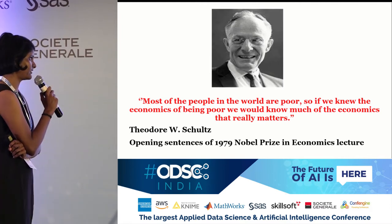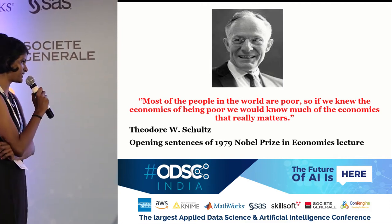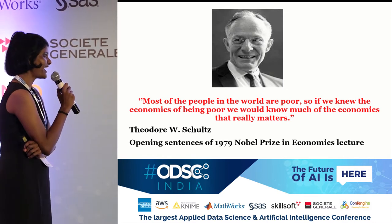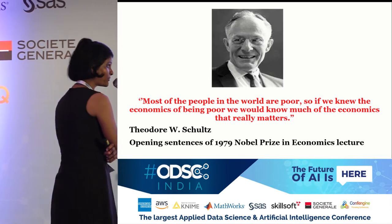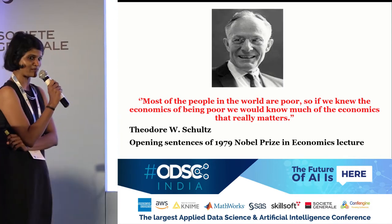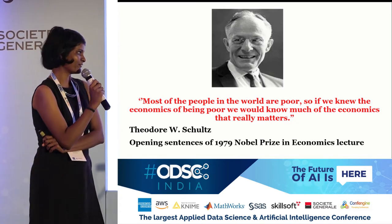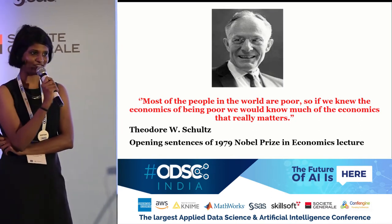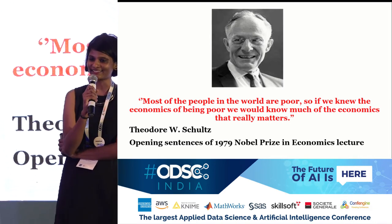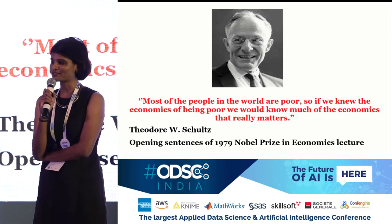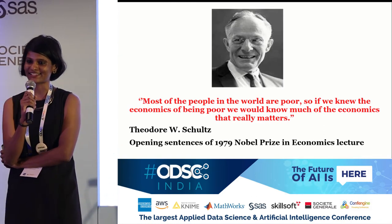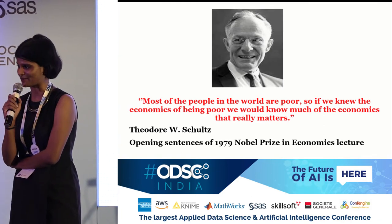This quote has been told by Theodore Schultz in his Nobel Prize Economics Lecture: most of the people in the world are poor, so if we know the economics of being poor, we would know much of the economics that really matters. This was told in 1979, and now we're in 2019. The statistics have changed, and things have changed considerably.